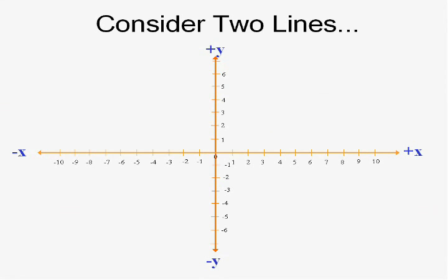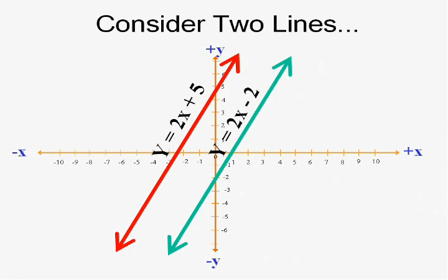Consider if we graphed two equations. Really three things can happen. One is that they're parallel. We know these two are parallel even if we didn't see them because they have the same slope. Remember the 2 in front of the x. If that's the same, then they're going to be parallel.